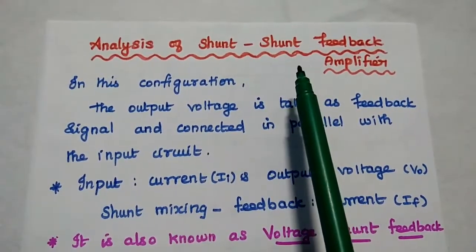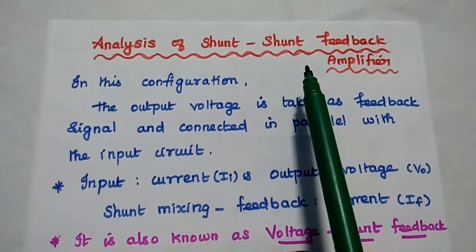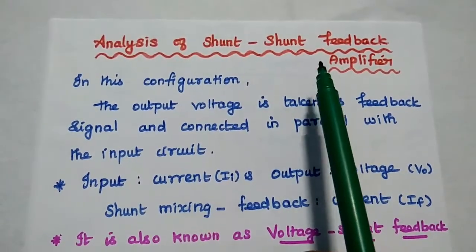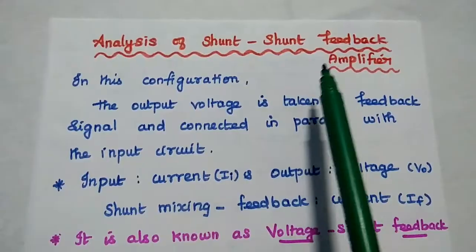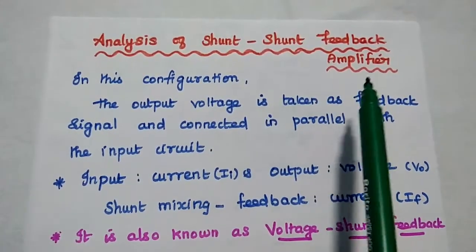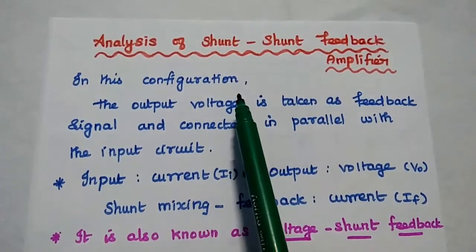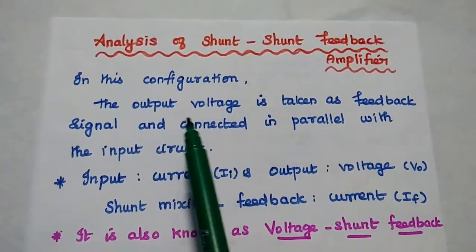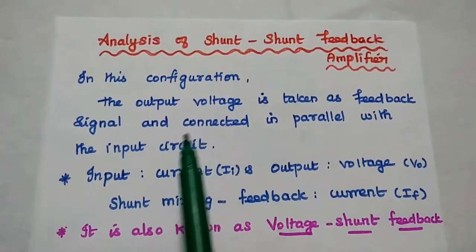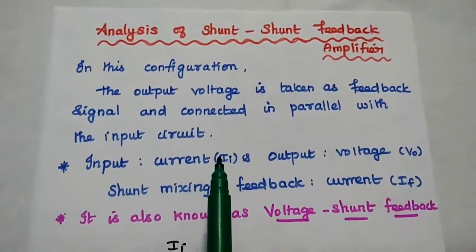The second term represents the way of sampling the output signal. Shunt sampling represents voltage sampling, meaning the output is a voltage signal. In this configuration, the output voltage is taken as the feedback signal and connected in parallel with the input circuit.